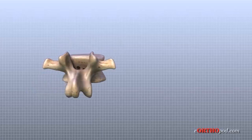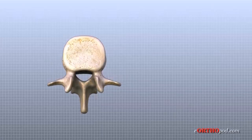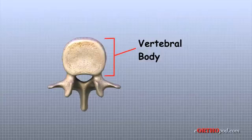Each vertebra is formed by a round block of bone called a vertebral body. The lumbar vertebral bodies are taller and bulkier compared to the rest of the spine. This is partly because the lumbar spine has to withstand pressure from body weight and from daily actions like lifting, carrying, and twisting.